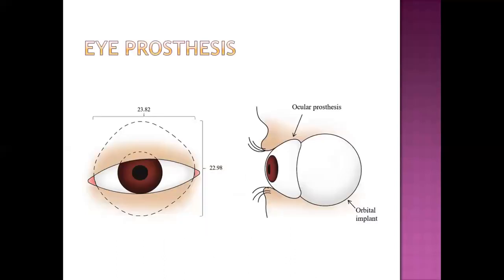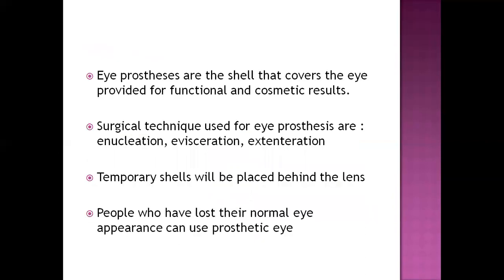Eye prosthesis is an artificial eye — a plastic-made prosthesis that can be implanted in the orbit with eye muscles, provided to people with physical deformity of the eye. It provides both functional and cosmetic results. Some prostheses like contact lenses can be implanted without surgery, while some require surgery. Surgical procedures include enucleation, evisceration, exenteration, and use of temporary shells placed behind the eyelid for people who have lost their eye structurally or functionally.